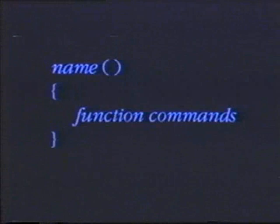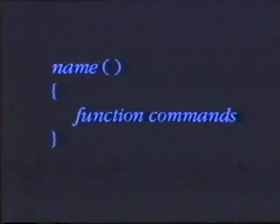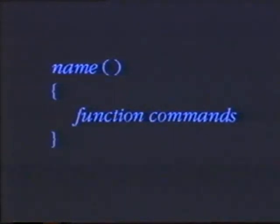A shell function has a very specific format. First, you have the name of the function and then a set of parentheses. The delimiting beginning and ending part of the function are an opening and closing set of curly braces. Inside the curly braces sits the body of the function — the commands to be executed if you run this function.